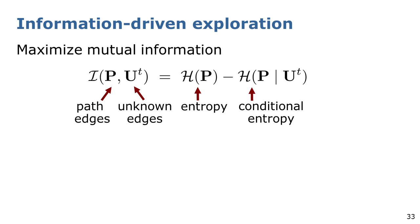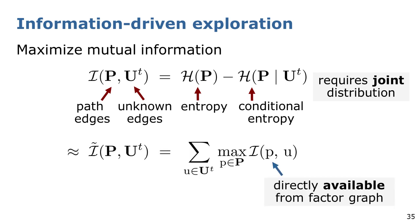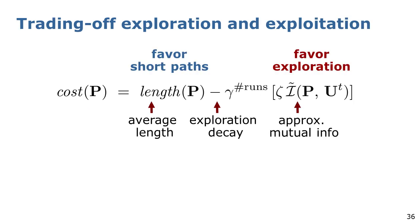We collect information by maximizing the mutual information between the edges along the path and the unknown ones. However, we don't have direct access to the full joint distribution, and thus, we approximate the mutual information with the pairwise mutual information between the edges, which can be directly obtained from our factor graph. Therefore, to select a path, we perform rollouts in the same way as CTP-UCT, but then consider a cost function that trades off exploration and exploitation, where the path length favors short paths, and the mutual information favors exploration.